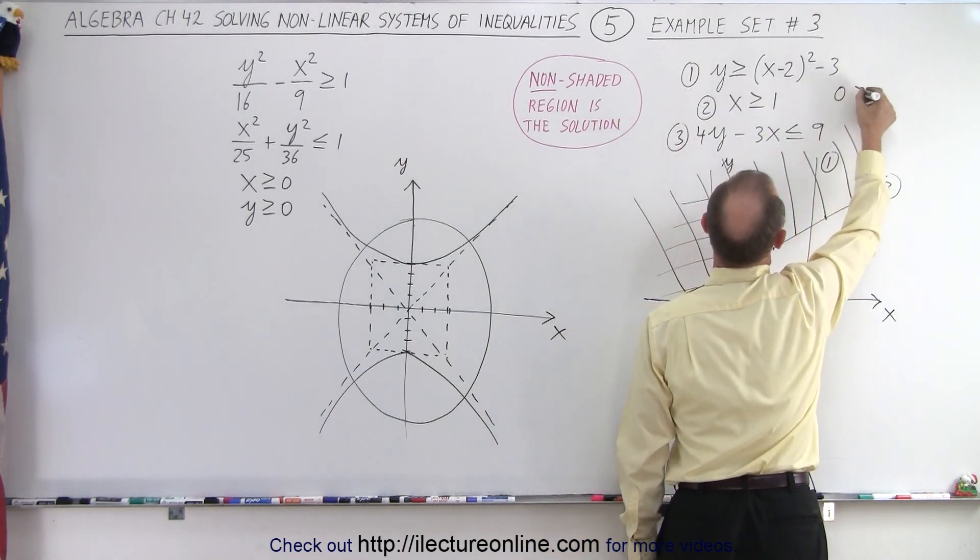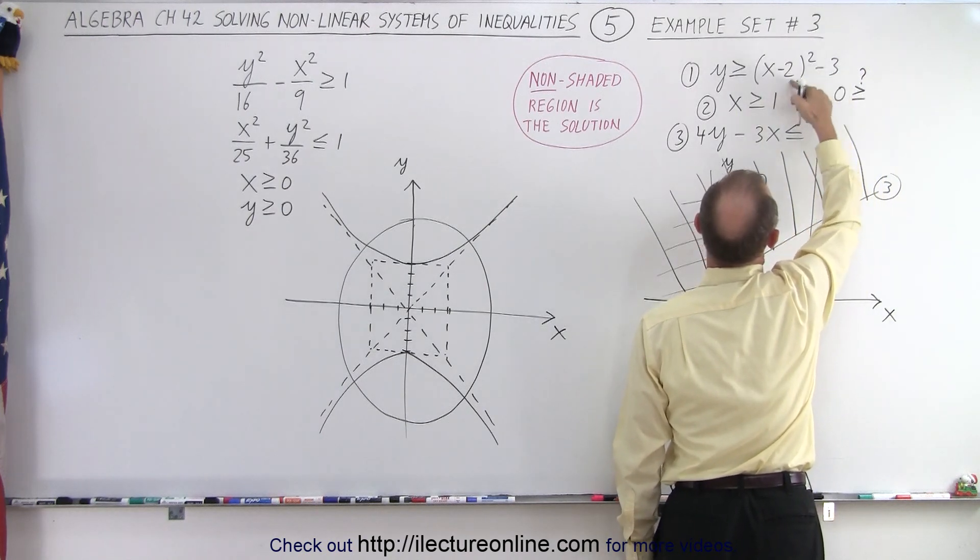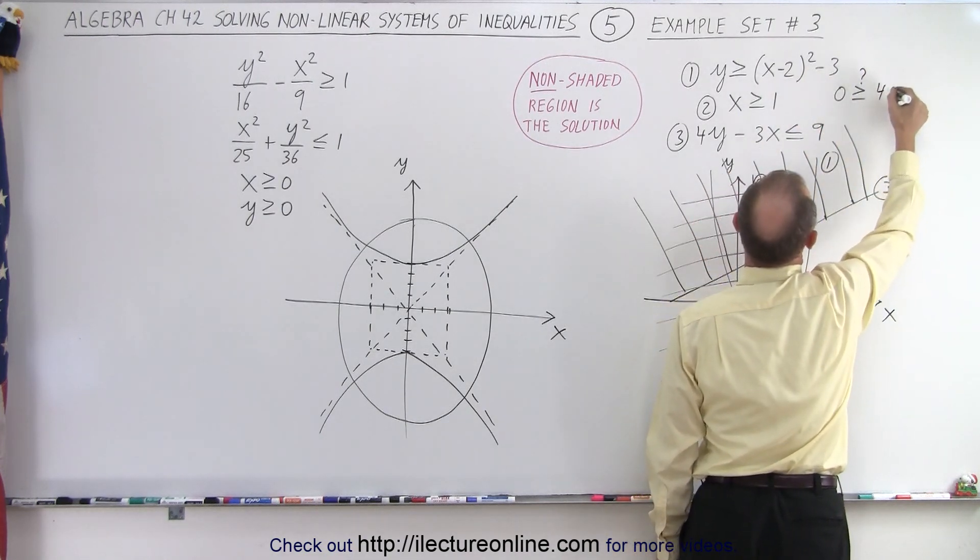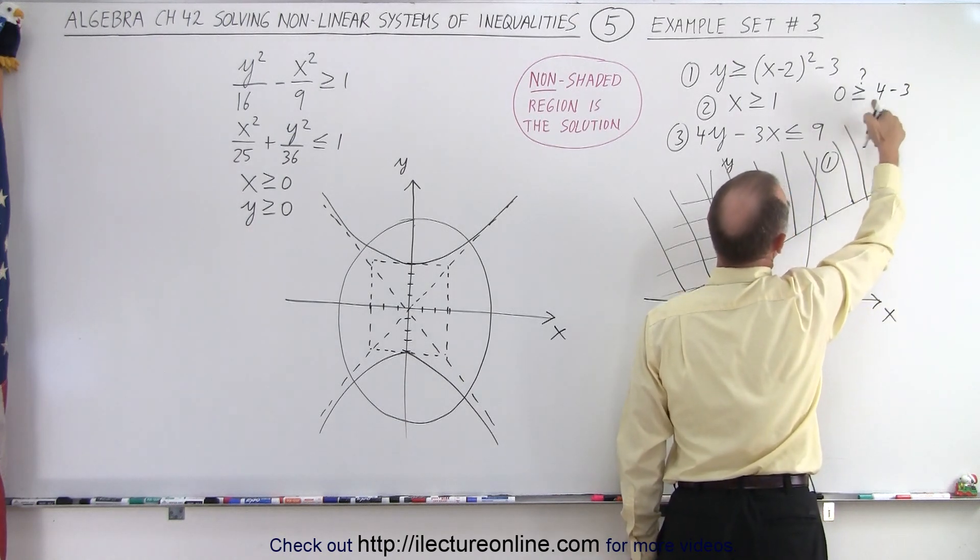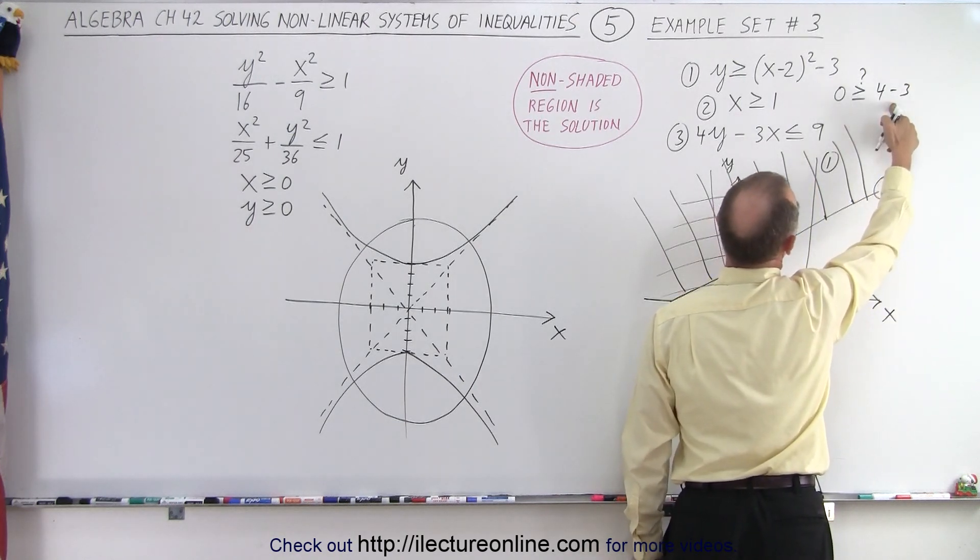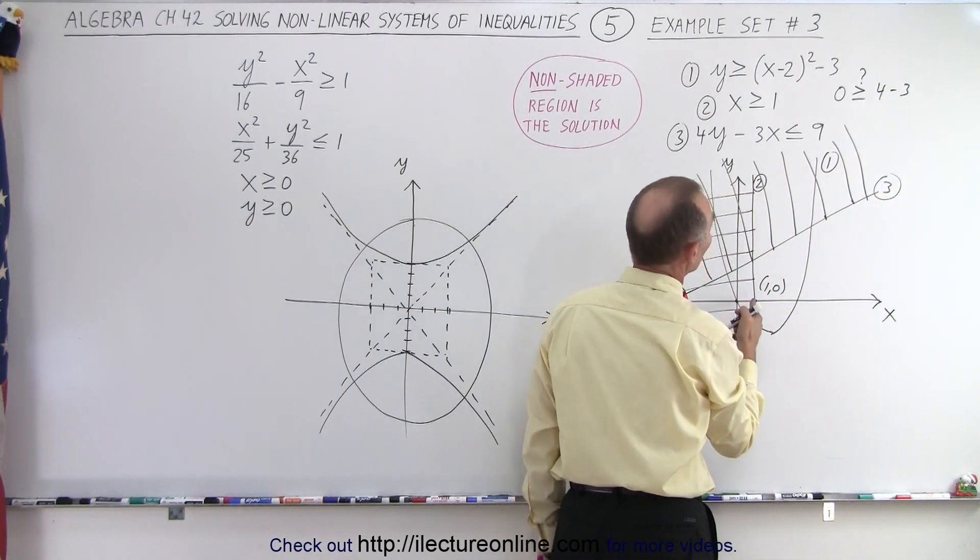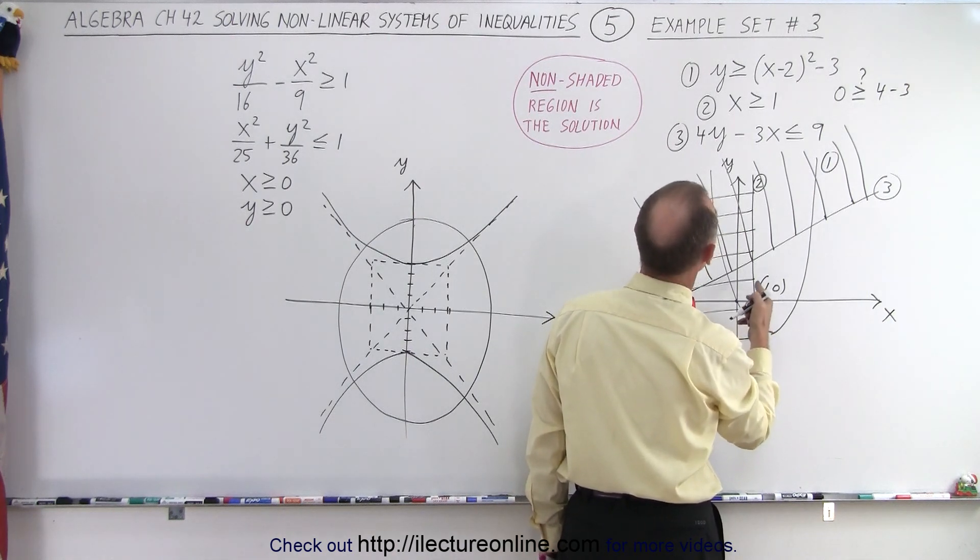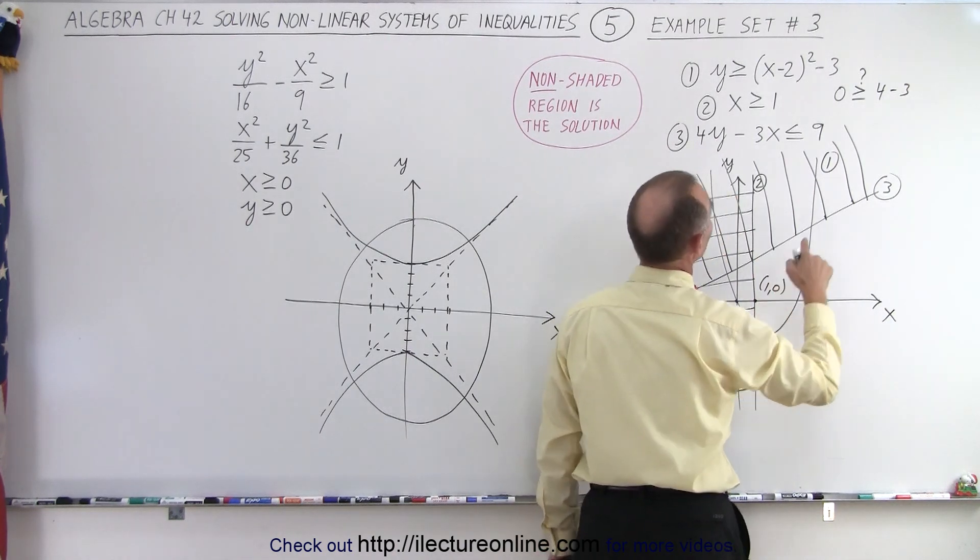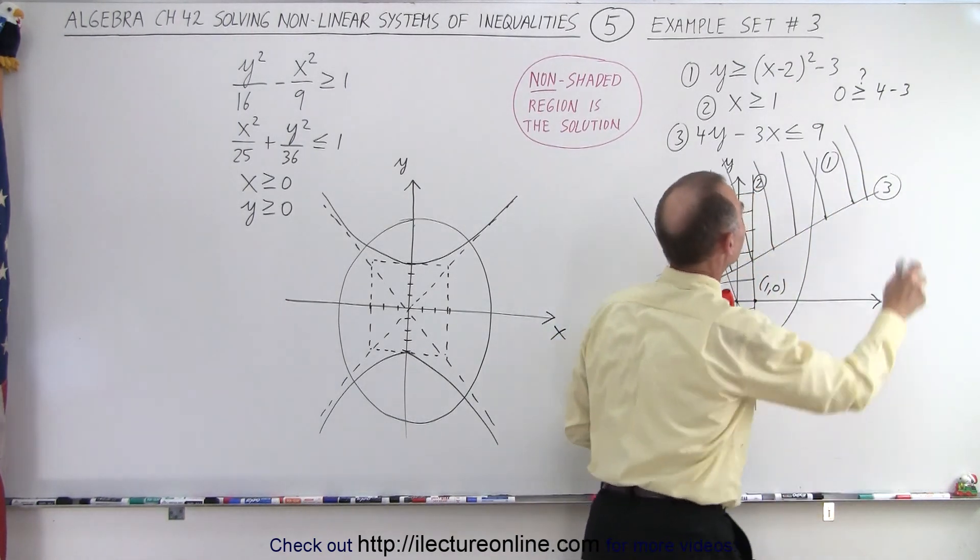We get zero greater than or equal to question mark, zero minus two squared. Two squared is four, that gives you four minus three, which is a positive one. Is zero greater than one? The answer is no. That means I picked a point which is not part of the solution. Let's see. Did I do this right? One. Oh, no, I didn't do it right. Let me take this back. I think I made a mistake in my attempt here.